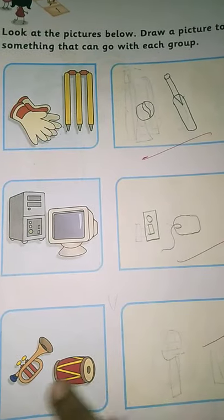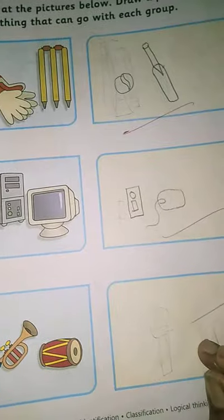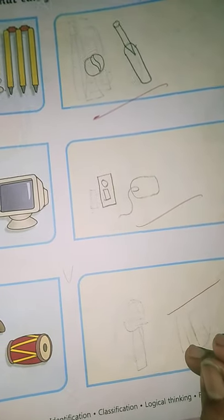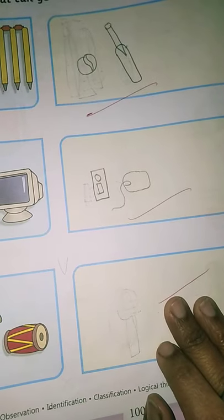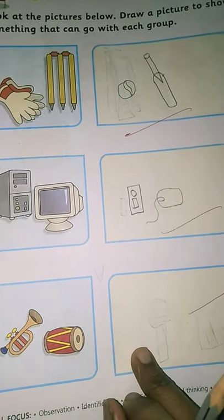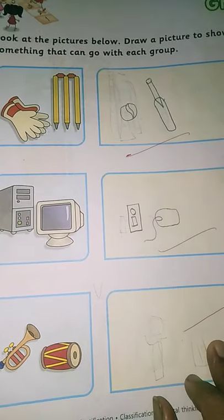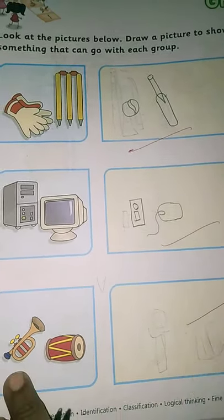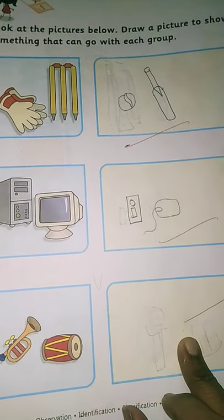The next one is of musical instrument. Yaha pe dholak, trumpet dikha ya hai. You can draw xylophone, piano, mouth organ. Jo bhi aap ko aata hai, aap yaha pe nikaal sakte ho. Okay? Lekin, in dono ka match ho na chahiye. Because we are drawing the pictures related with the particular group. Is group ko match ho na chahiye. Now, musical instruments. Any of it you can draw here.